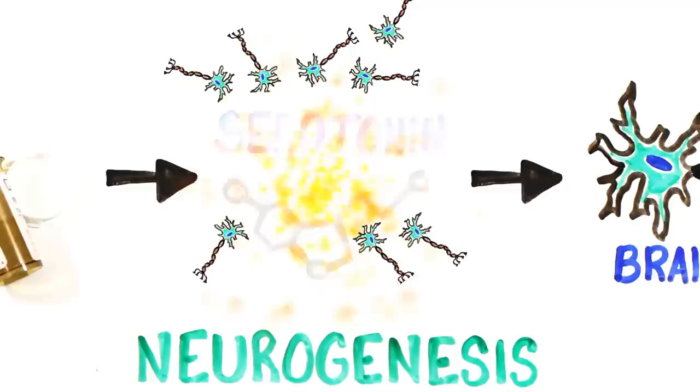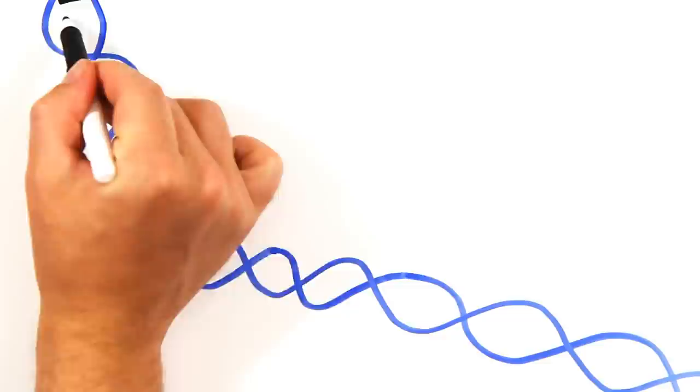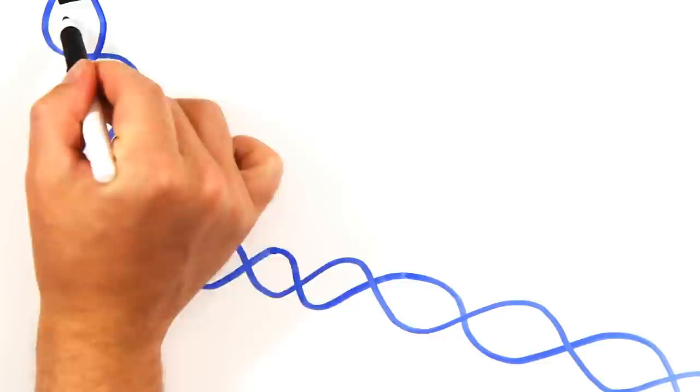Knowing this, some scientists now believe focus should be on drugs which directly affect neurogenesis. But while your neurons and chemicals may be the direct influencers, many genetic factors have been discovered as well.